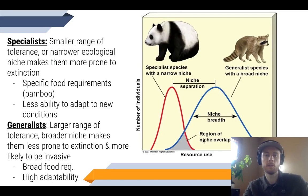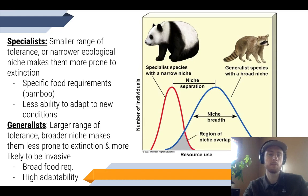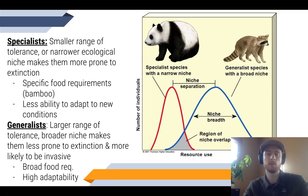Here we can look at the ecological tolerance of specialist and generalist species. Specialist species like the panda are going to have a really narrow range of ecological tolerance. They don't tolerate changing ecosystems very well because they have a really specific food requirement — that's bamboo. So if an environmental disturbance disrupts the ability of that forest to produce bamboo, those conditions are no longer really hospitable to the panda, so it's less able to adapt to new conditions.